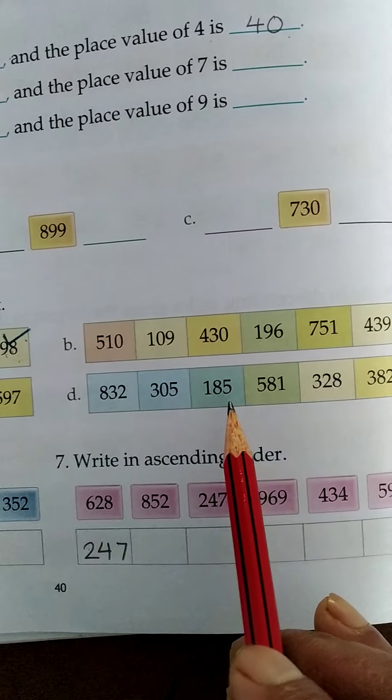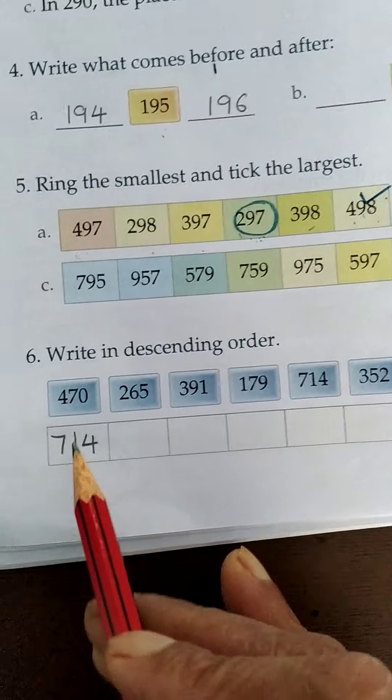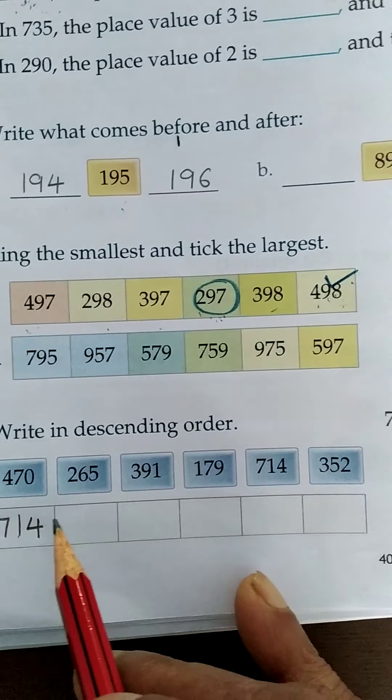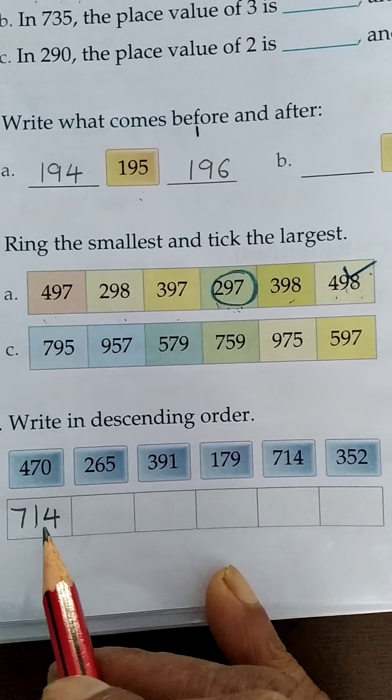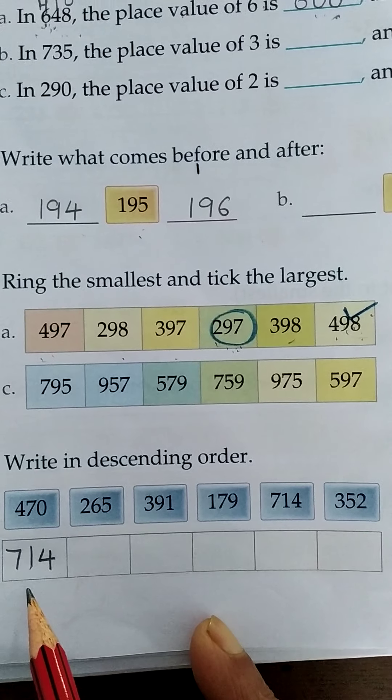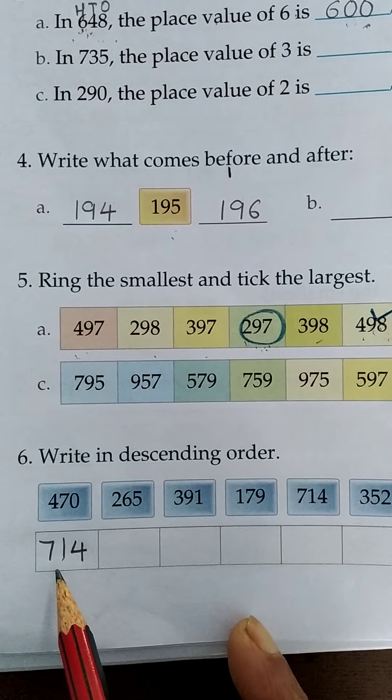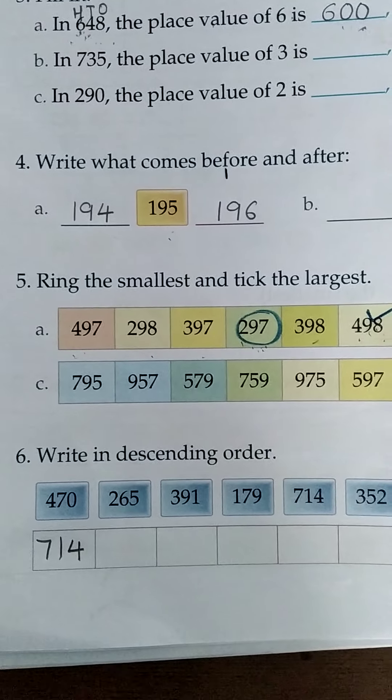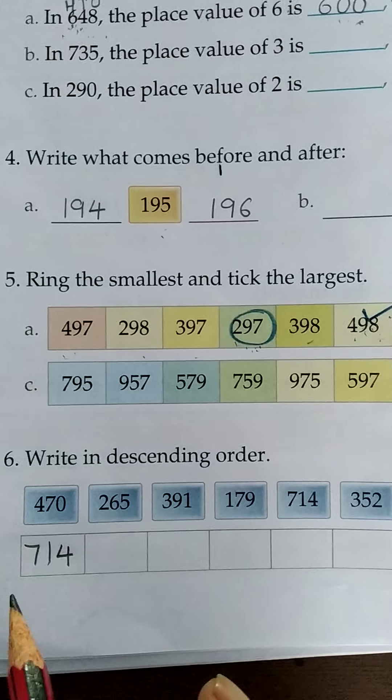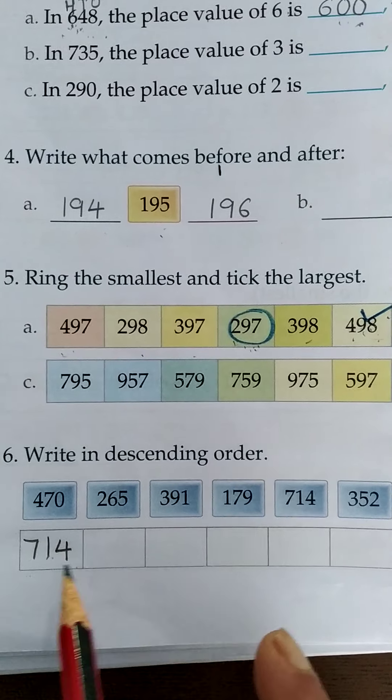Remaining you can do yourself. Number 6, write in descending order. In the descending order we start our number with the large number. It means backward counting. So the largest number I have written. Remaining numbers you have to write yourself.